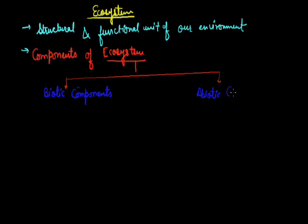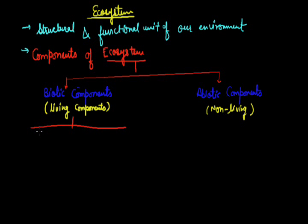While non-living components are called as abiotic components. In the case of living component we can categorize organisms into three categories. First one is called as producer, the second one is consumer, the third one is decomposer. Well in the case of abiotic component we can categorize non-living factors into two categories - physical and chemical factors.